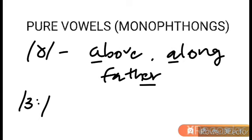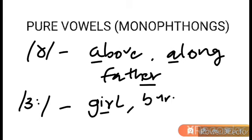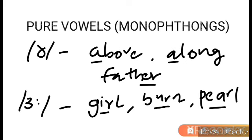The last pure vowel sound is /ɜː/. It is a longer, closed sound as in girl, burn, pearl. So these are the 12 pure vowels in English.